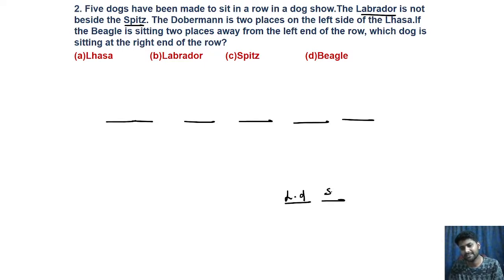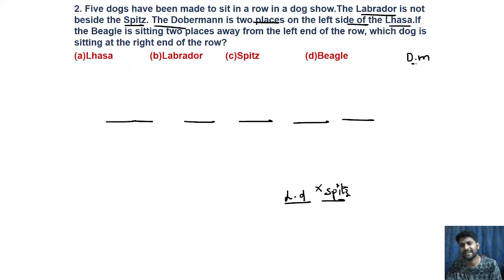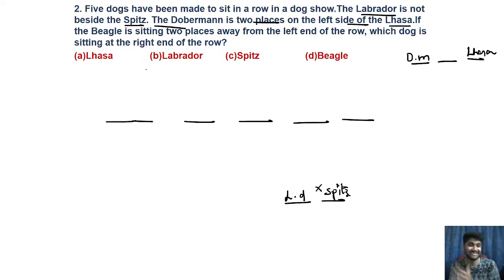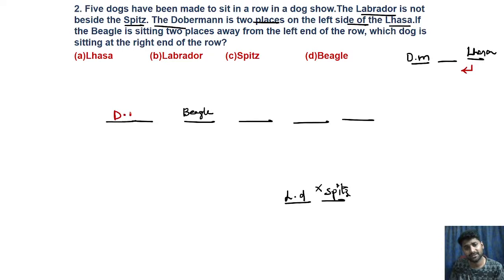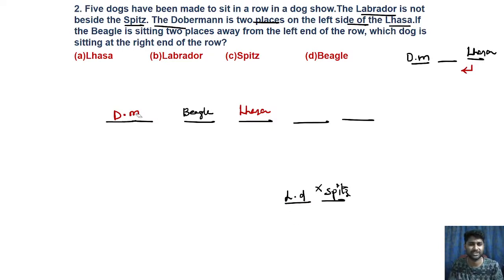The information states: the Labrador is not beside the Spidge — they cannot be placed adjacent to each other. The Doberman is two places to the left side of Lahasha. The Beagle is sitting two places away from the left end of the row, meaning Beagle is at the second position from the left. We confirm Beagle's position. The question asks which dog is sitting at the right end of the row.